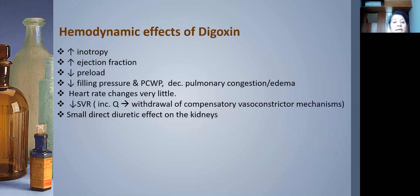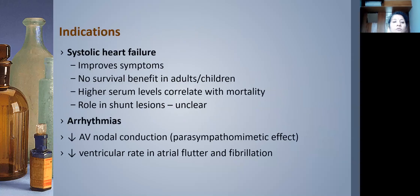Hemodynamic effects of digoxin go beyond positive inotropy: it increases ejection fraction, decreases preload, decreases filling pressures and pulmonary capillary wedge pressure, causes minimal change in heart rate, and decreases systemic vascular resistance. It also has a mild diuretic effect on the kidneys. It is useful in systolic heart failure for improving symptoms, but as noted earlier there is no survival benefit.